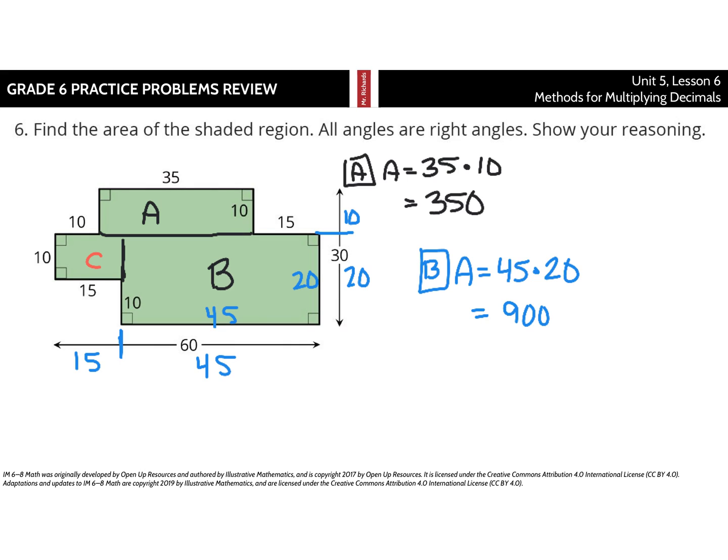Which leaves us with C. Now, C is neatly given to us. It's 10 times 15. And so, 10 times 15 is 150. And, to finish the question, we're going to take our area of A, 350, add it to our area of B, 900, add it to the area of C, which was 150, and that should be 1,400 square units. There are multiple ways of getting there. You can divide these in many different ways. You can even use subtraction by finding the area of the big thing and subtracting out little rectangles and squares. But, for right now, this one seems pretty good.